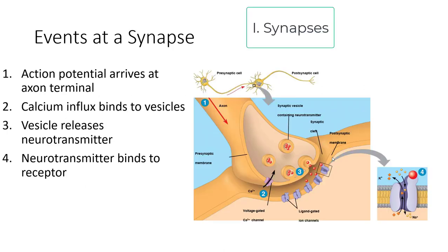First off, let's look at the events that occur at a synapse. A synapse is at the end of an axon where that axon either meets a dendrite of another neuron or the cell body of another neuron.